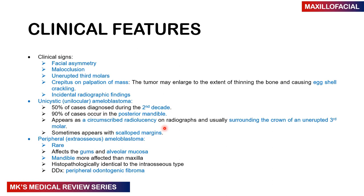Clinical signs include facial asymmetry, malocclusion, and erupted third molar teeth. The tumor may be an incidental radiographic finding. For the unicystic or unilocular type, 50% of cases occur in the second decade, 90% in the posterior mandible, presenting as a well-circumscribed radiolucency that may surround an unerupted tooth — potentially resembling a dentigerous cyst. You may also get scalloping of the margins. The peripheral type is rare, may involve gums or alveolar mucosa, and the mandible is more affected than the maxilla.